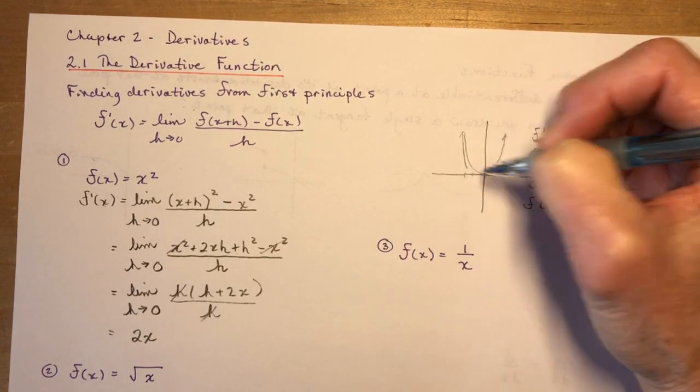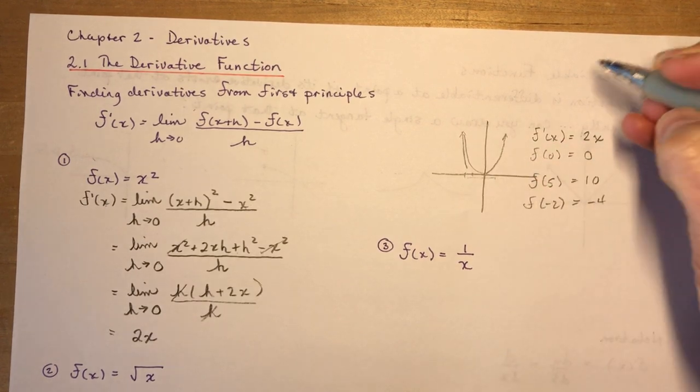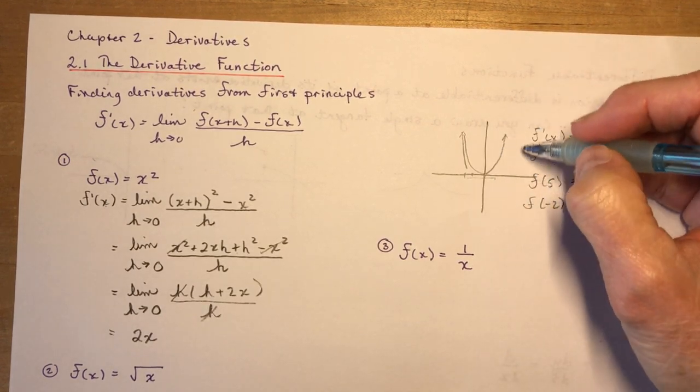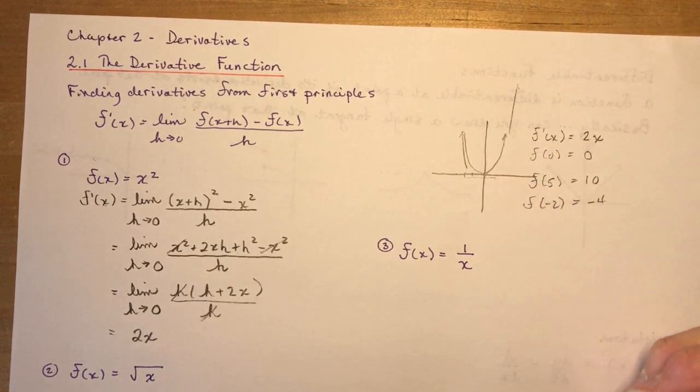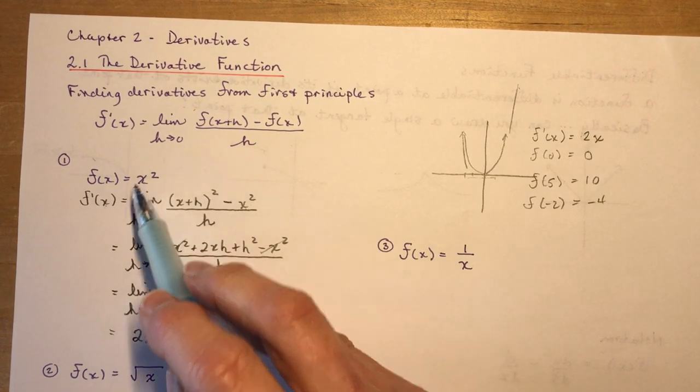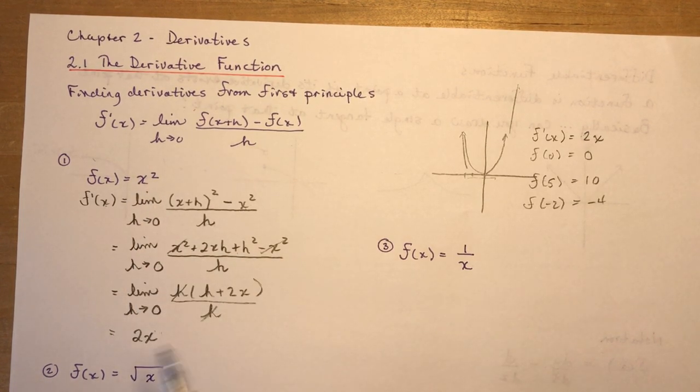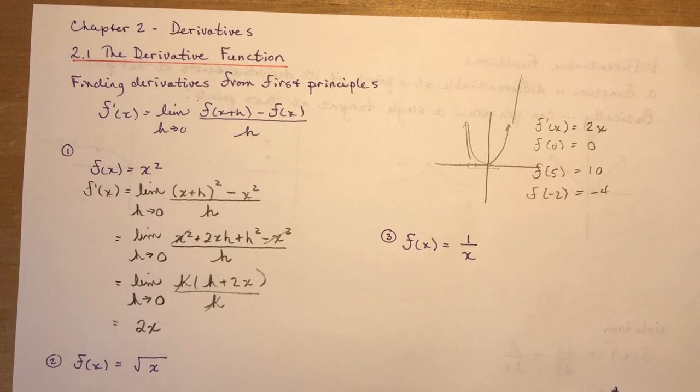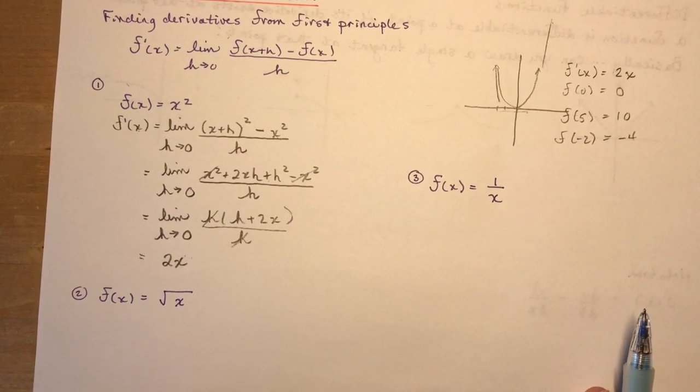1, 2, negative 4, 0, 5. This is a very powerful little function that now you can determine the slope for any value of x to the graph of x squared. Remarkable, isn't it? You should be impressed, and wowed, and thrilled.